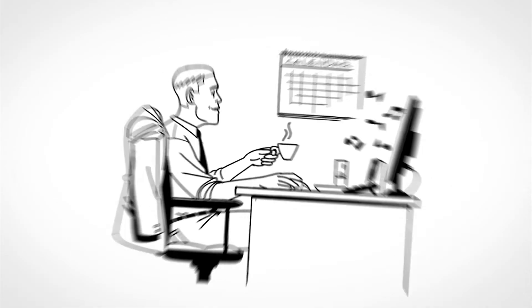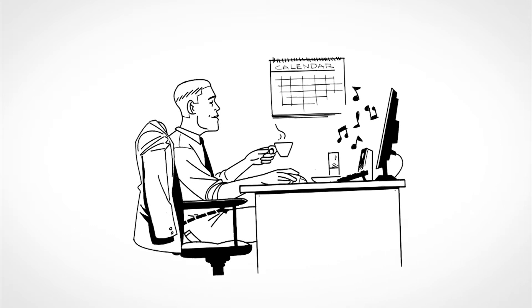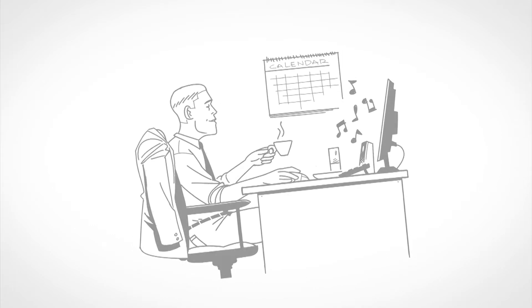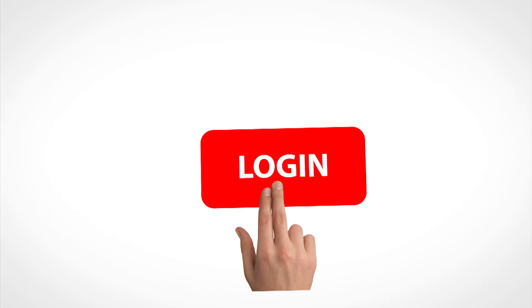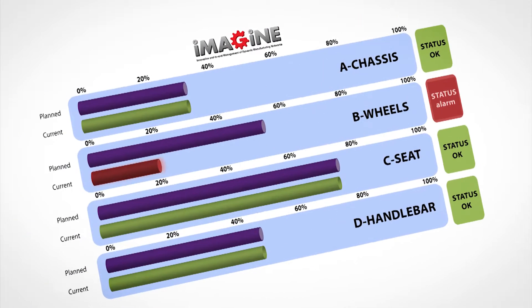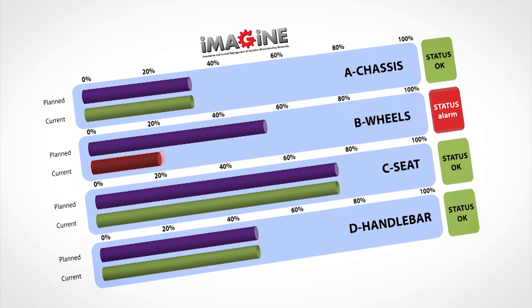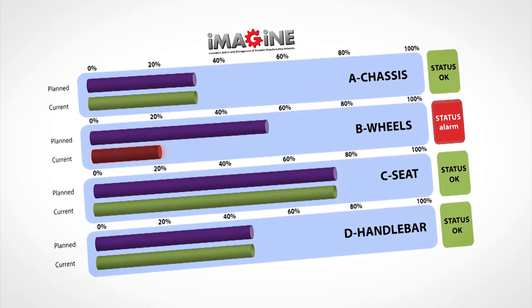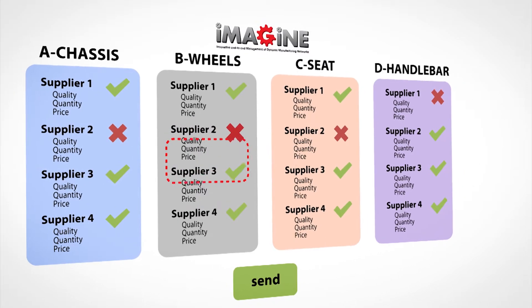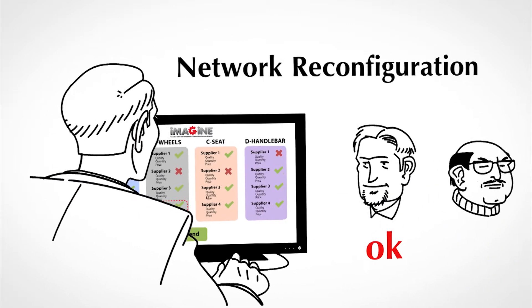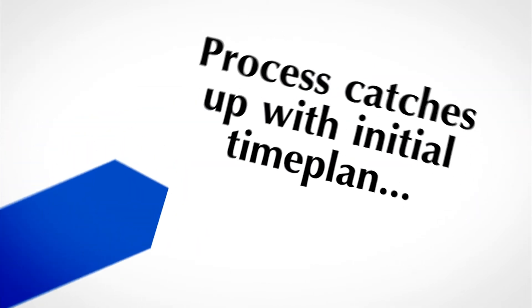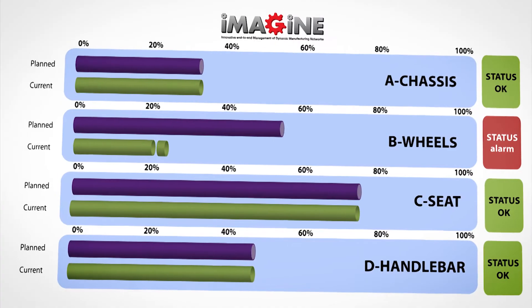Overwhelmed by the time saved thanks to Imagine, Mr. Goodworth is glad that the manufacturing process has started so soon. A few days later, Mr. Goodworth receives an alert concerning the production. He enters the Imagine platform, navigating to the network production monitoring screen displaying the progress indicators of the manufacturing process. The platform shows a warning indicator next to the supplier whose production is behind schedule. Switching back to the supplier selection configurator, he finds another supplier capable of carrying out the remaining order. Imagine sends the new manufacturing orders to the new supplier, notifying the old one to terminate his process. At the end of the day, the manufacturing process that was behind schedule catches up with the initial time plan.